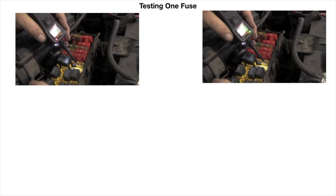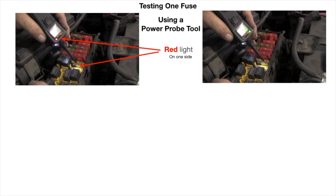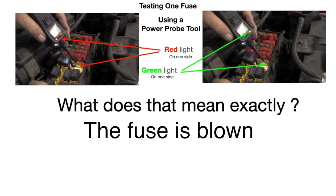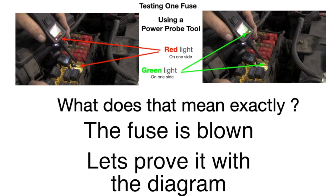Now if we are testing one fuse with a power probe tool, you'll see a red light on one side of the fuse and a green light on the other side of the fuse. Now what exactly does that mean? The fuse is blown, right? Well, is that enough? Let's prove it with the diagram.